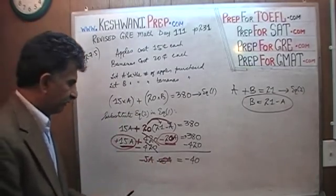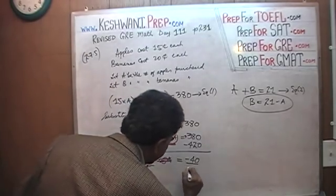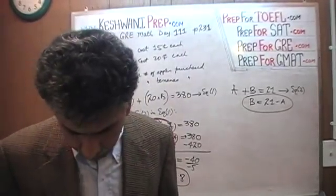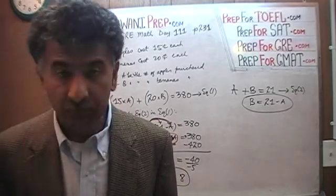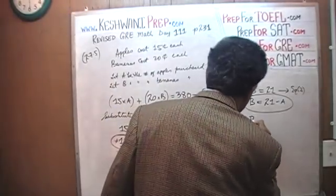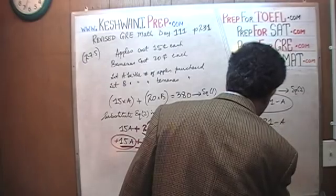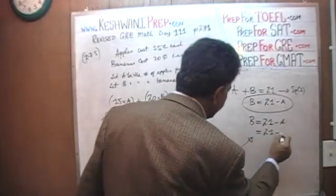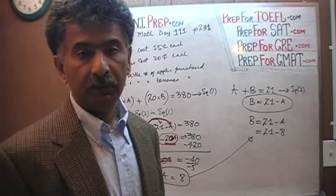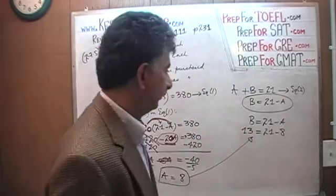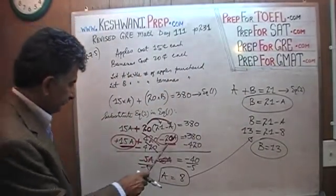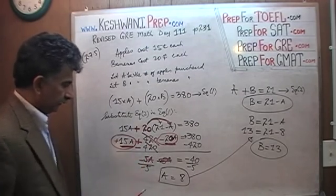Negative 5A equals negative 40. Dividing both sides by 5, A equals 8. But the question asks how many pieces were pears — bananas in our case. So we solve for B: B equals 21 minus A equals 21 minus 8. Since 21 minus 10 is 11, 21 minus 8 must be 13. The answer is 13.